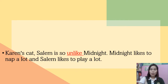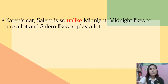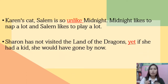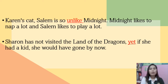Sentence examples for contrast: 'Karen's cat Salem is so unlike Midnight — Midnight likes to nap a lot and Salem likes to play a lot' — 'unlike' shows contrast. Next: 'Sharon has not visited the Land of Dragons yet; if she had a kid, she would have gone by now' — 'yet' is a word that shows contrast.